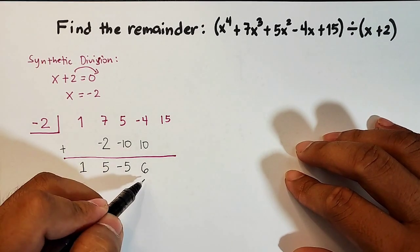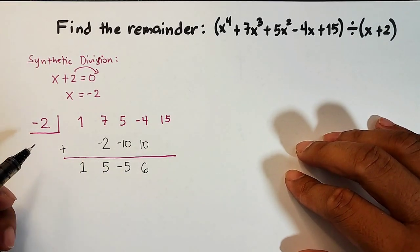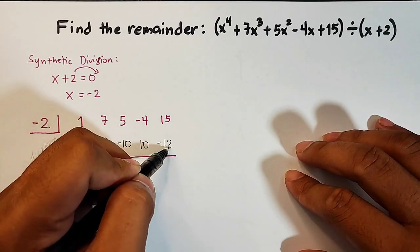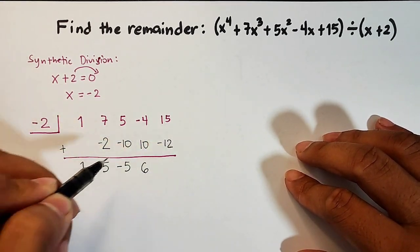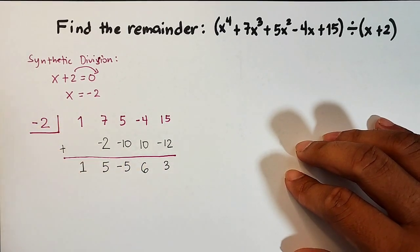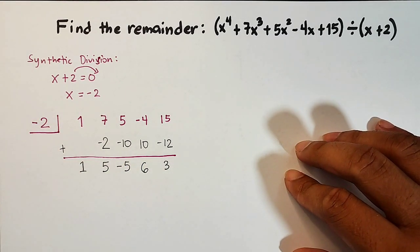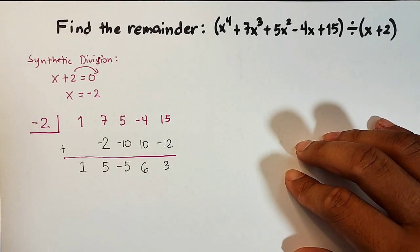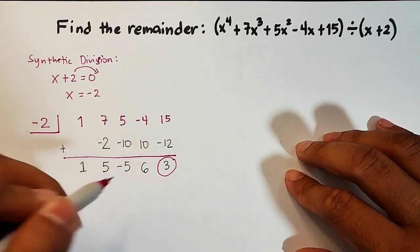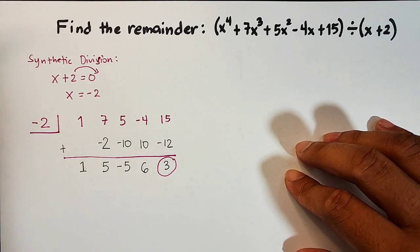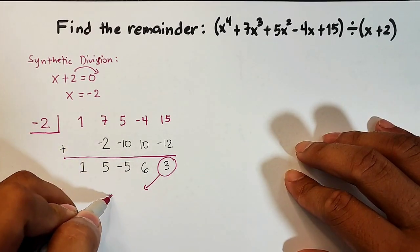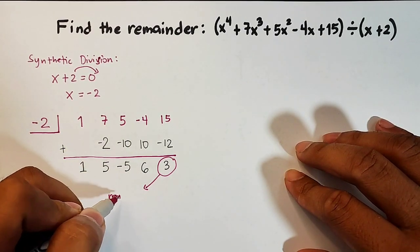Lastly, 6 times negative 2 is negative 12. Then 15 plus negative 12 gives us 3. This 3 right here is your remainder. Remember, we used synthetic division to get this remainder.